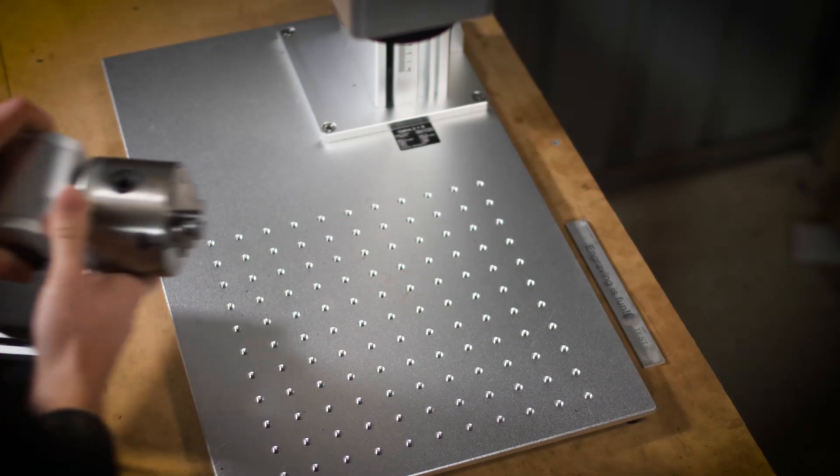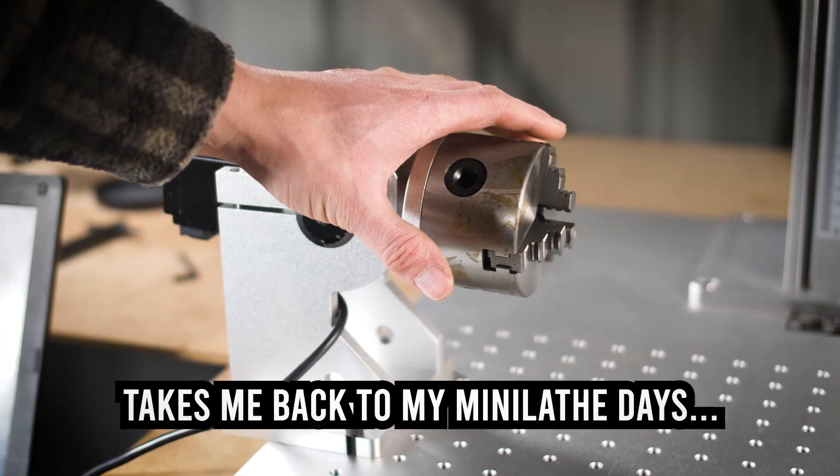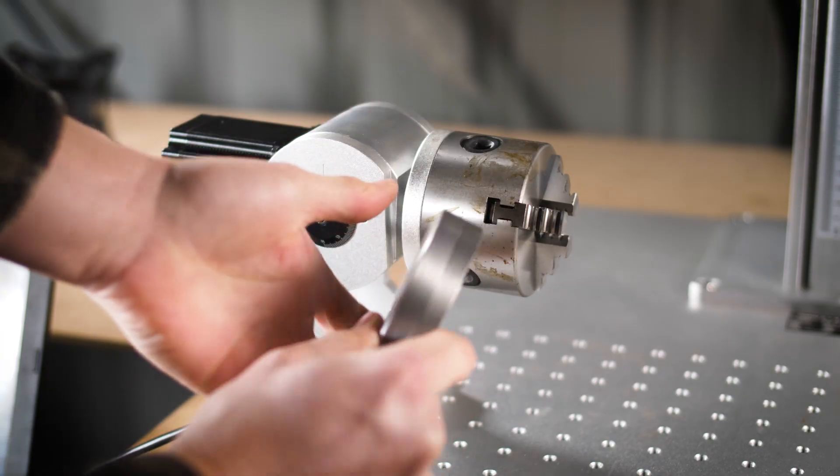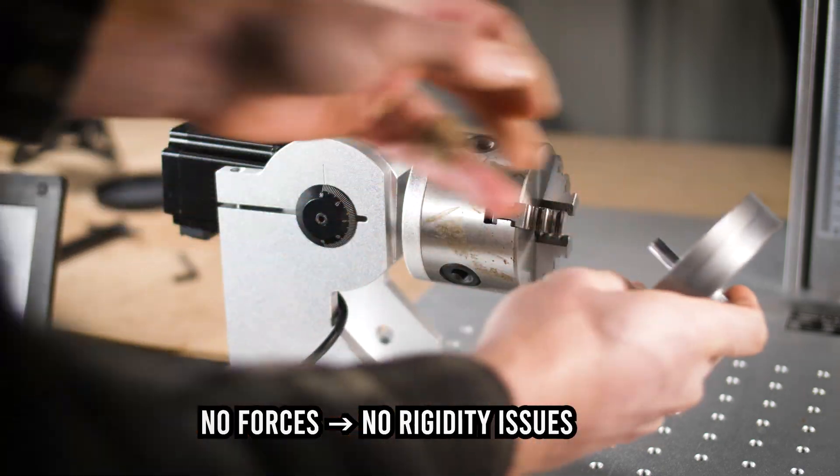The laser has a rotary axis attachment. While the chuck is small, anything is possible with clever work holding. Say if I wanted a large hand wheel dial, I can make an arbor to overcome the work holding limitation.